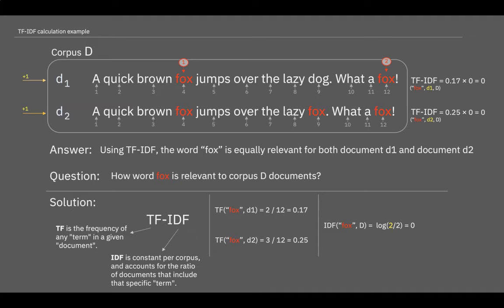This is done by multiplying two metrics: how many times a word appears in a document and the inverse document frequency of the word across the set of documents. It has many uses, most importantly in automated text analysis and is very useful for scoring words in machine learning algorithms for NLP.